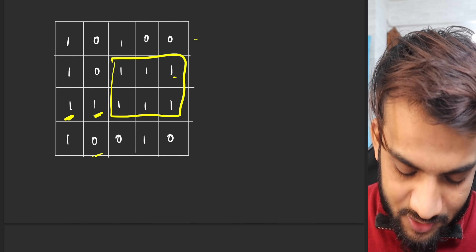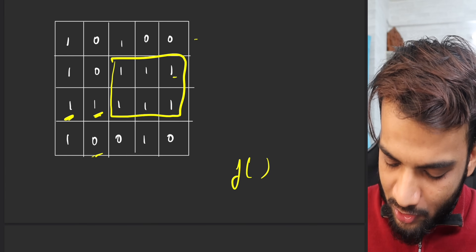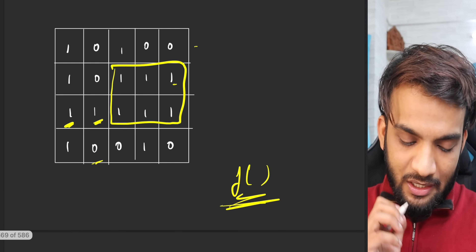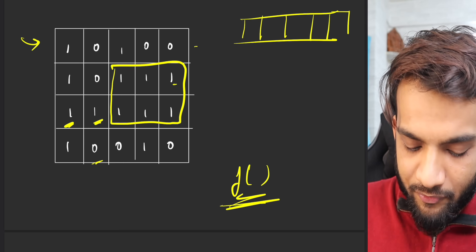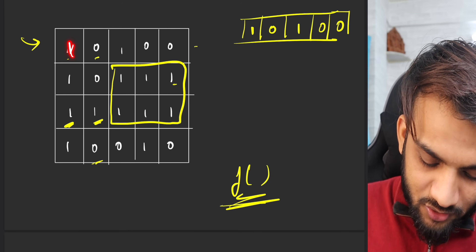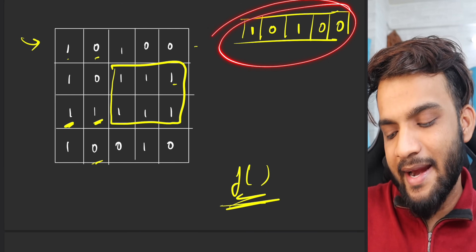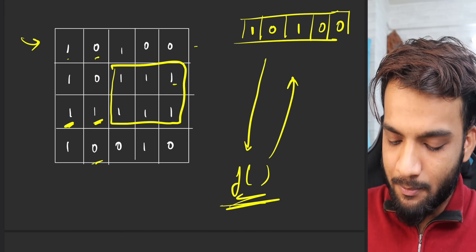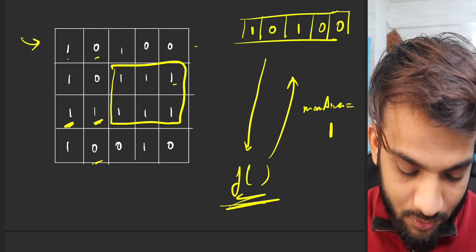We've already written a function to find the largest rectangle in a histogram. For every row we need the histogram heights. In the first row, across all five columns, the heights are 1, 0, 1, 0, 0. Passing this to the function gives a maximum area of one.